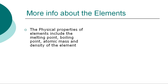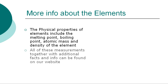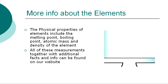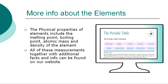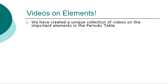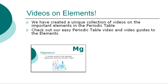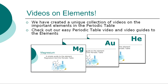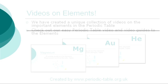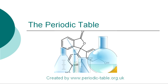The periodic table conveys some items of element classification at a glance. However, elements are classified by many other factors, including their atomic mass, atomic radius, melting point, boiling point, density, Mohs hardness, conductivity, electronegativity, and energy. All of these precise measurements, together with additional facts and information, can be found on our website. In addition to our website, we have created videos on every element in the periodic table. This unique collection of videos will enable you to gain a fast overview of the properties of each of the elements, together with details of their discovery and history. Check out our simple video guide to each element via our website.